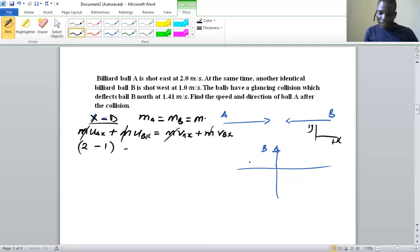After collision, ball B deflects north, so in the x direction it doesn't have a velocity component. So vB'x is zero.